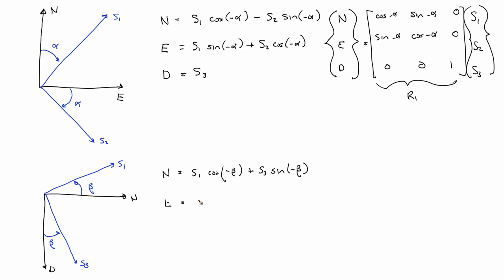East is S2. That's the axis the rotation's about. And down, I'm going to have minus S1 sine minus beta, plus S3 cosine minus beta.